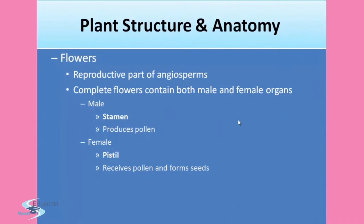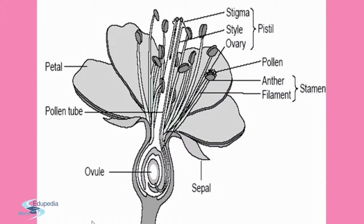Now, plant structure and anatomy: the flower is the reproductive part of the angiosperms. A complete flower contains both male and female organs. The male parts are the stamen and the anther, which produces pollen. The female part is the pistil, which receives pollen produced by the male part and forms seed. Stigma, style, and ovary comprise the gynoecium — the pistil. The anther is bilobed, the filament supports it, and these two together are the stamen. The petals and pollen tube are also visible in this representation.